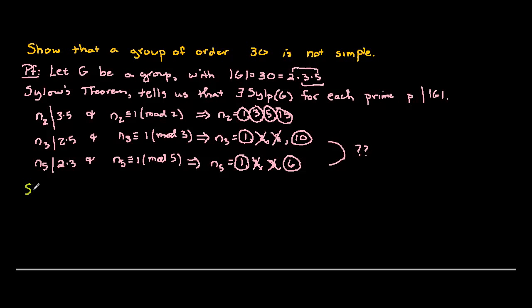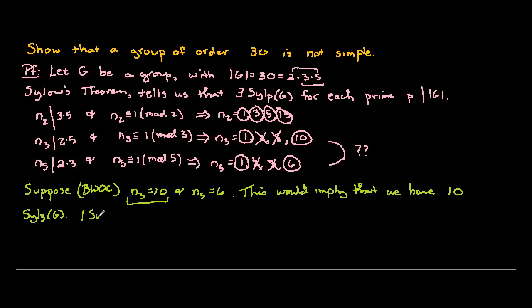By way of contradiction, let's suppose that n sub 3 equals 10. So there's 10 Sylow 3 subgroups, and n sub 5 equals 6. In other words, there's 6 Sylow 5 subgroups. If we do this, we can learn about the possible number of elements in our group. n sub 3 equals 10 means there are 10 Sylow 3 subgroups. A Sylow 3 subgroup in this case has just 3 elements.